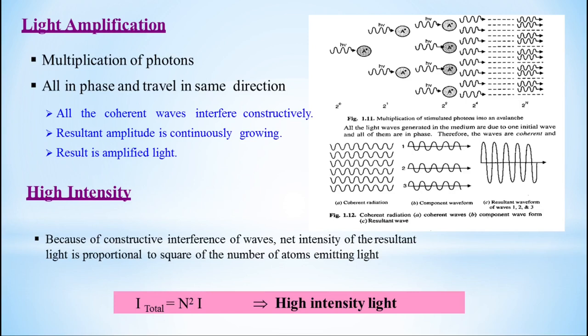This is depicted in the picture here. All the photons are in phase with each other and travel in the same direction. All the coherent waves interfere constructively, and the resultant amplitude is continuously growing. Therefore, the resulting light is amplified light with high intensity. Because of constructive interference of waves, net intensity of the resultant light is proportional to the square of the number of atoms emitting light.